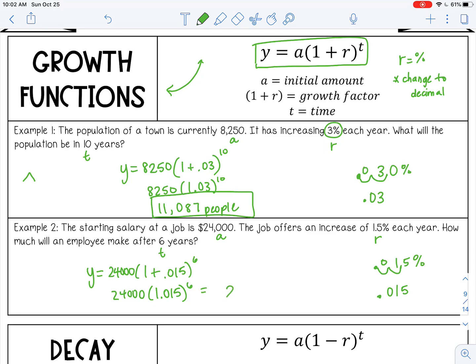And that gave me 26,242. Now this is money, so we want to the hundredths place, 6, 4. Make sure you put the dollar sign out front. So after 6 years with that increase, someone is going to make $26,242.64.